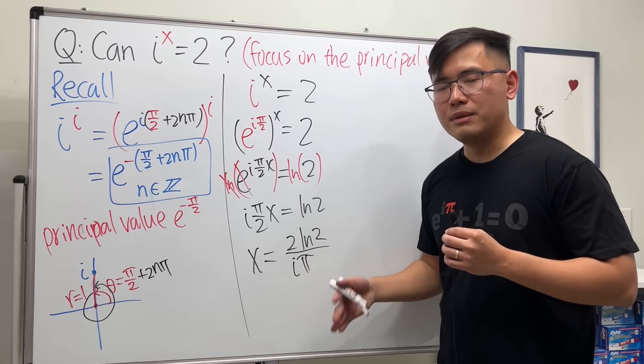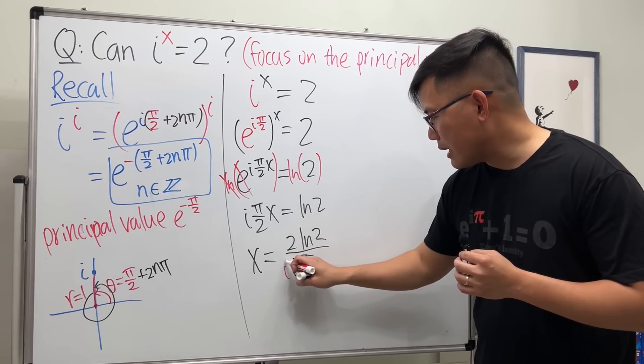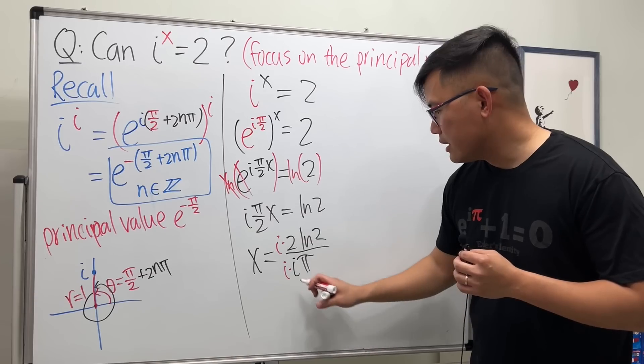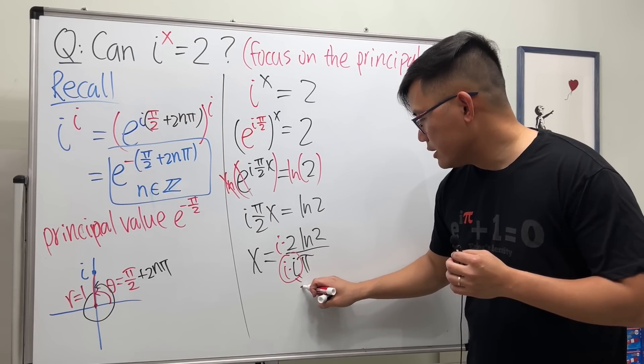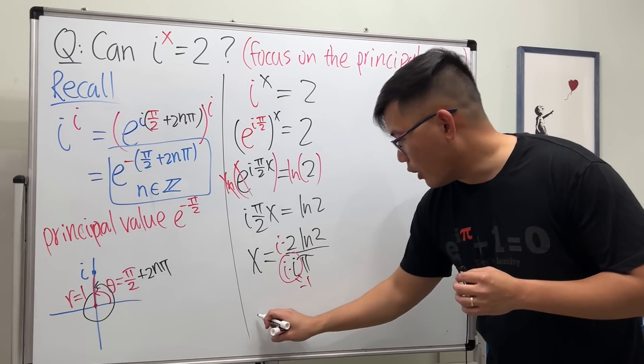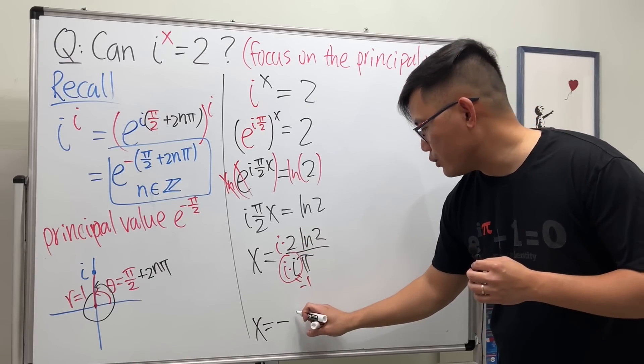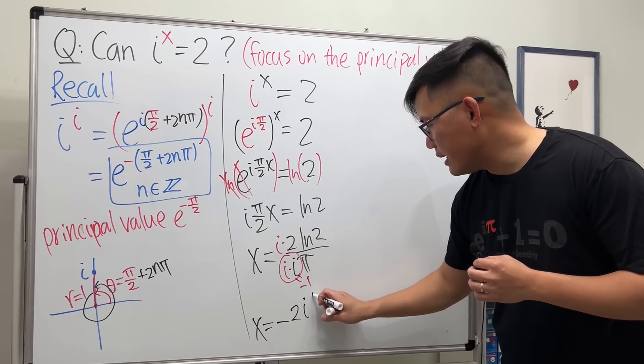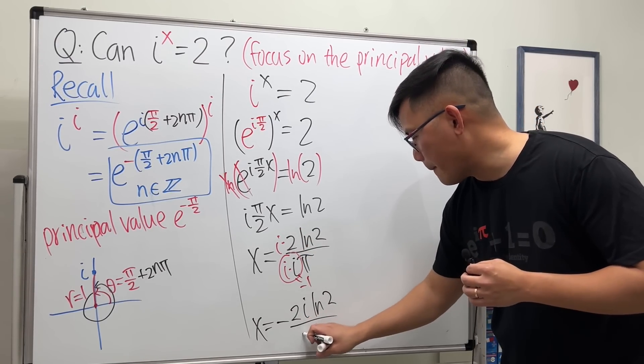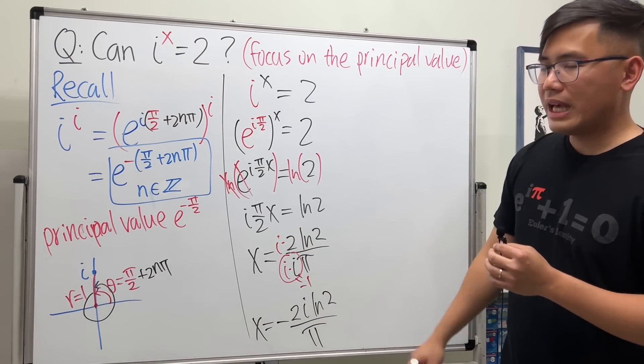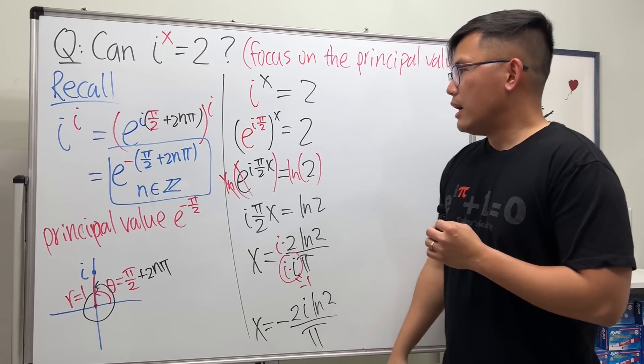And of course we also divide by i, so I will also put an i right here. But I don't like i to be on the bottom, I like to be on the top, so let's multiply the top and bottom by i. Together this will give us negative one, so all in all we get 2i ln 2 over π. That's pretty good.